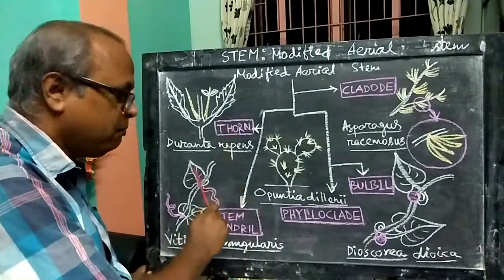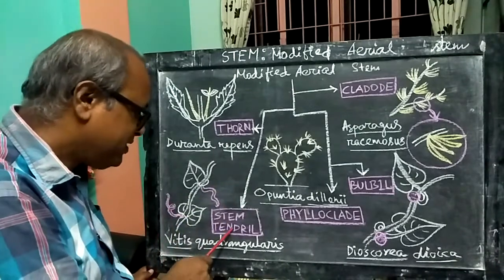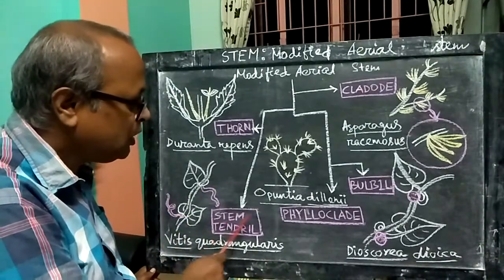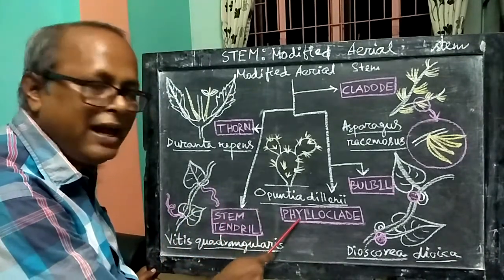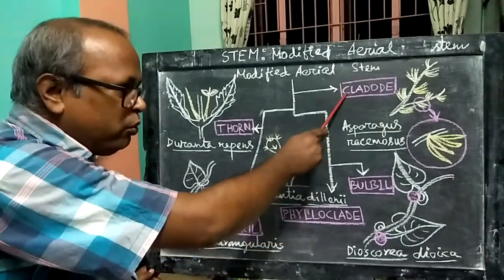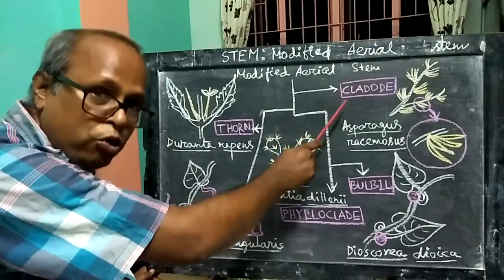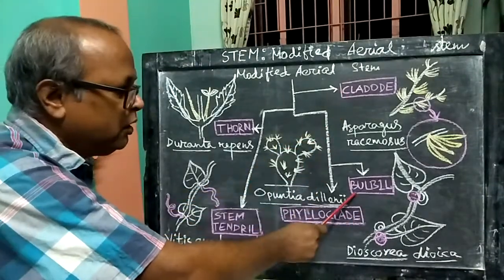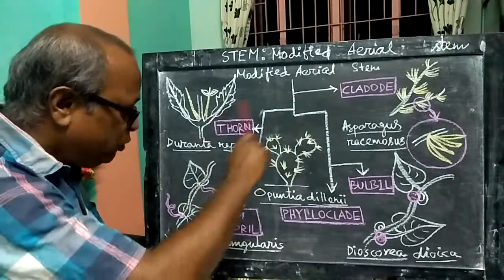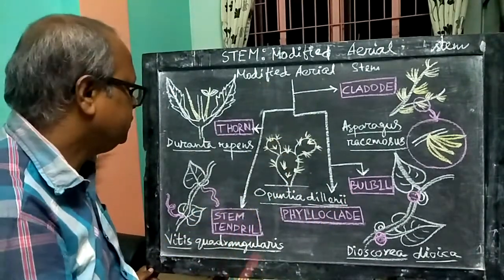The 5 modifications of the aerial stem are: Thorn, Stem Tendril, Phyloclad, Cladode, and Bulbil. So we will go through each of these one by one.